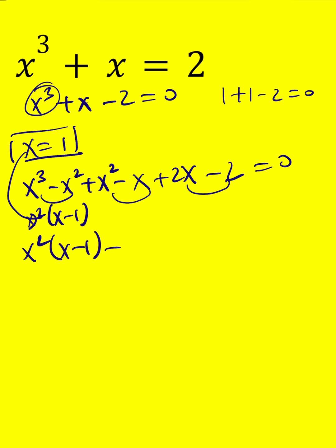And now you can factor out the x minus 1, which gives us a quadratic x squared plus x plus 2 equal to 0.